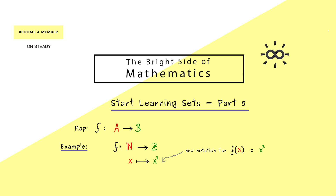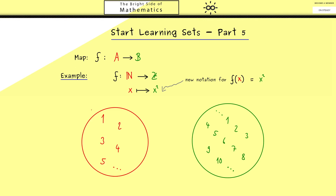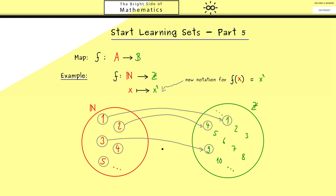Let's look at a visualization of this particular map. We have the natural numbers on the left hand side and the integers on the right hand side. We can draw our arrows — for example, 2 is mapped to 4. Here you see the limits of such a visualization: we can't draw all the arrows simply because we have infinitely many of them. However, we can still see immediately that we don't hit all the points in the co-domain.